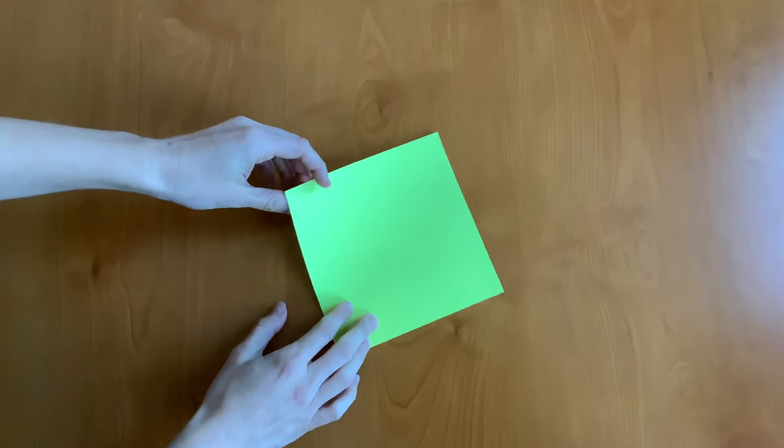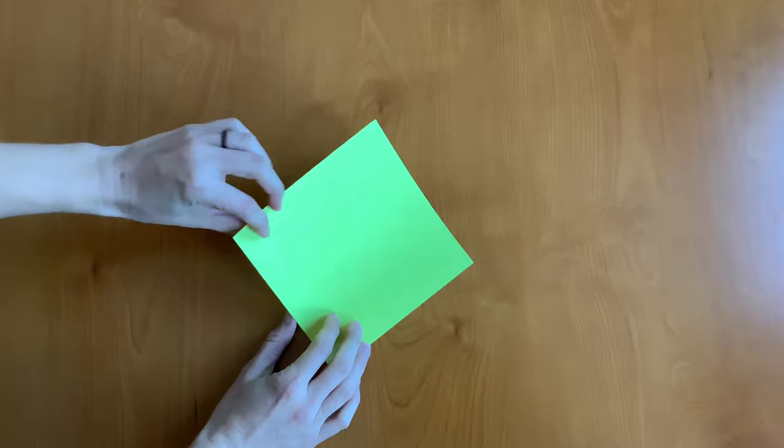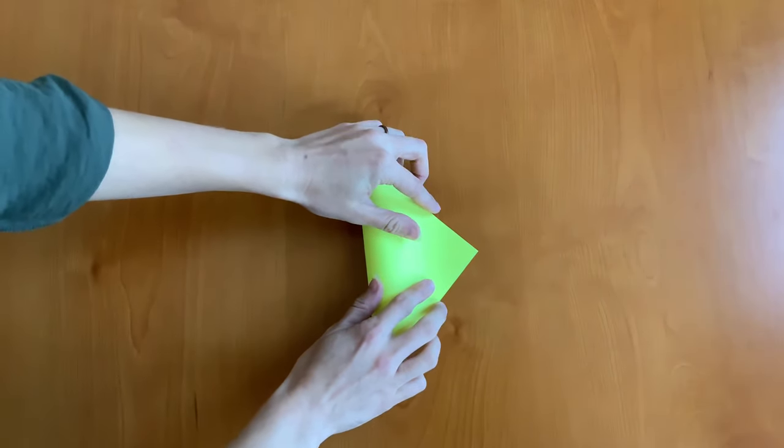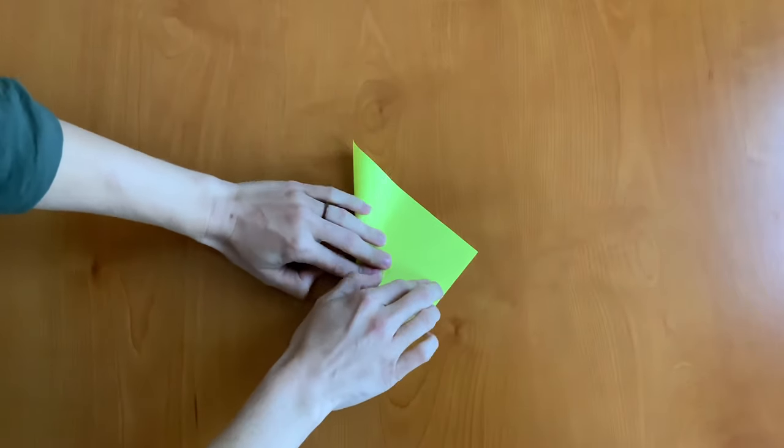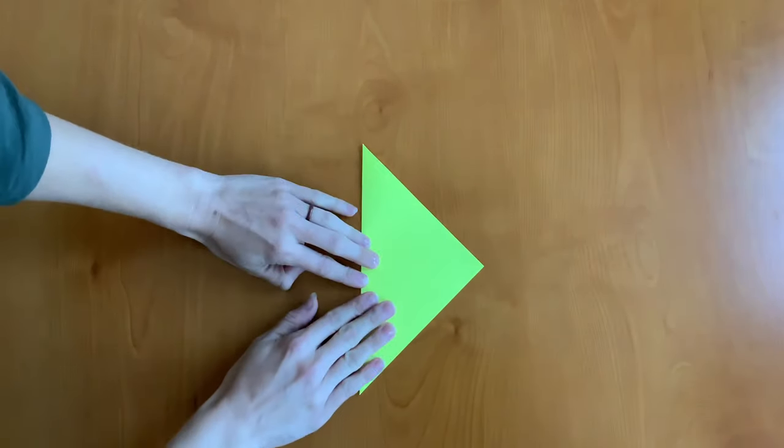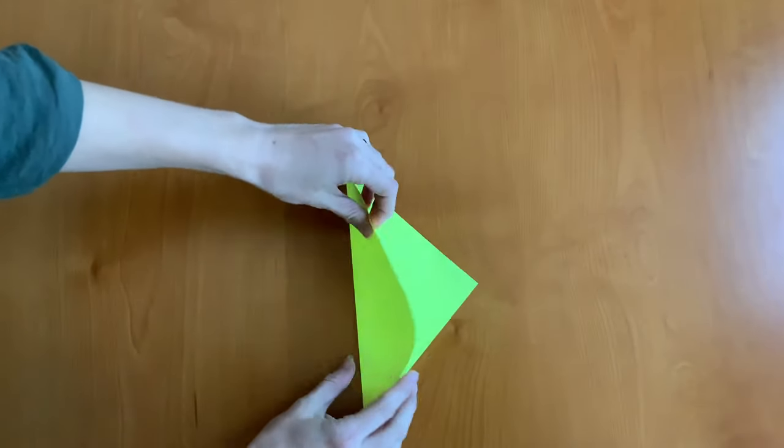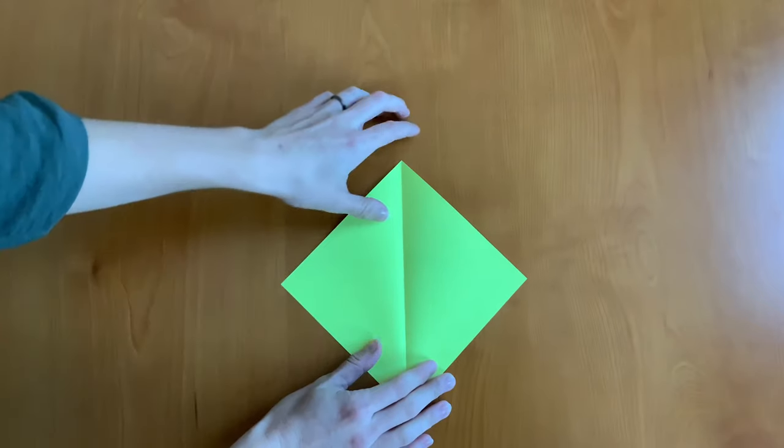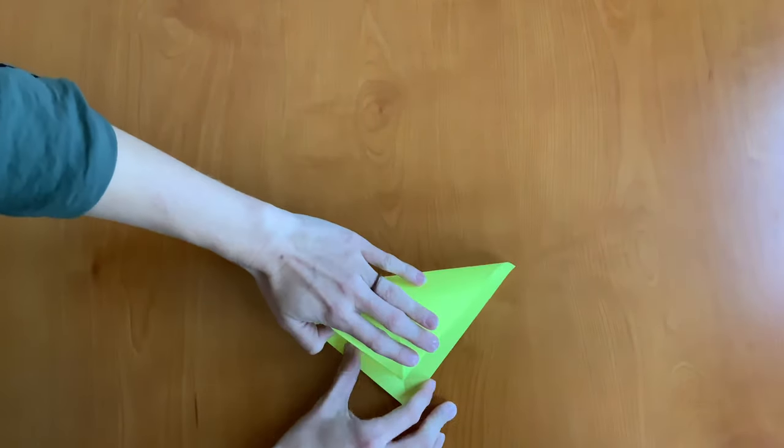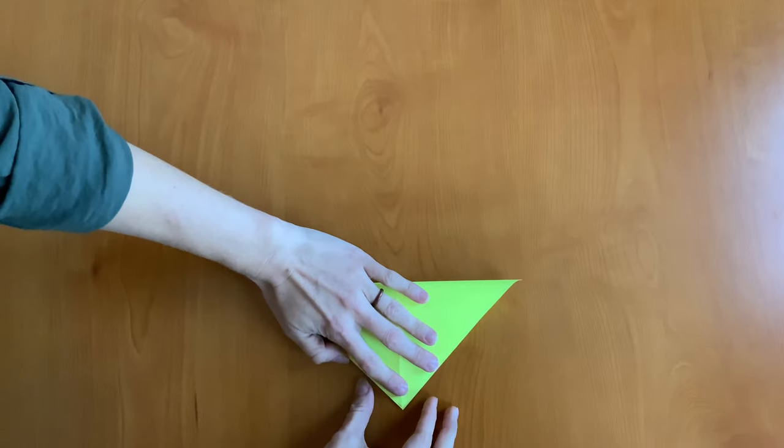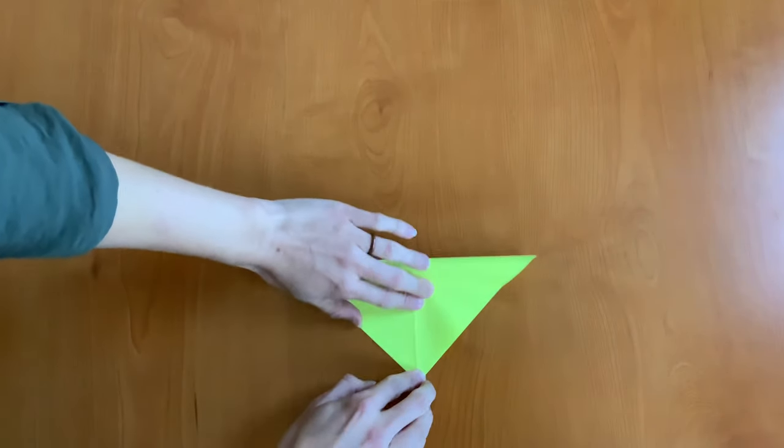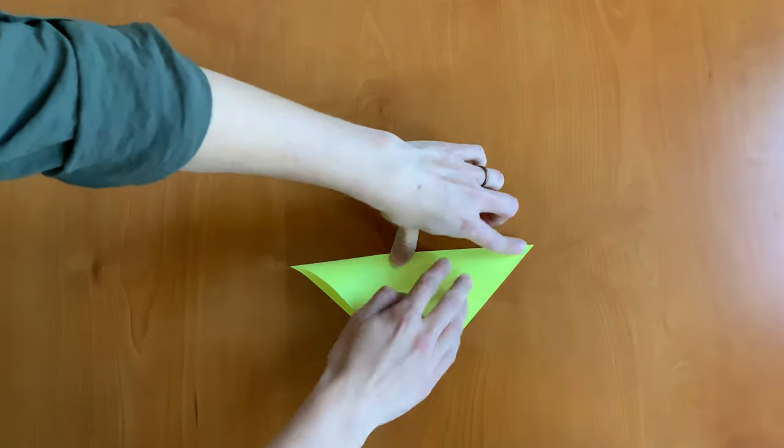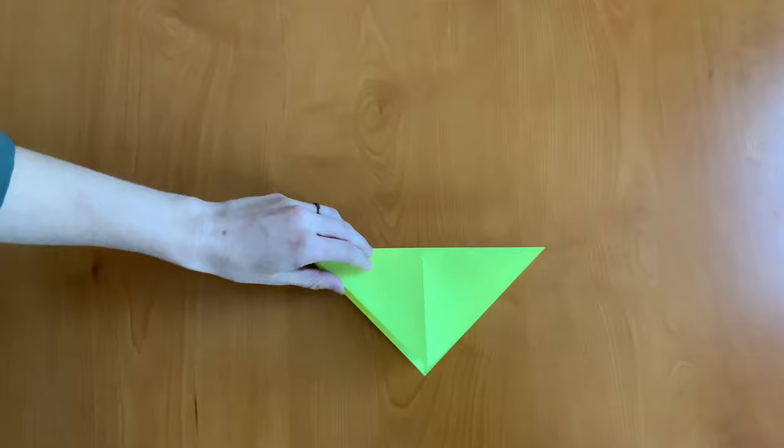Our first step is going to be to fold your origami paper in half by folding the left corner to the right corner. And then we'll unfold. Next we're going to fold the top corner to the bottom corner. And we'll unfold again.